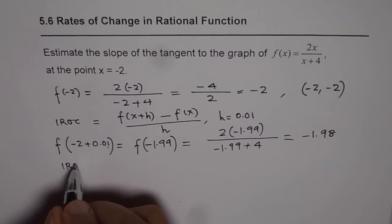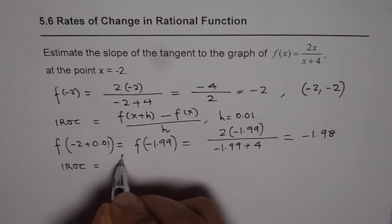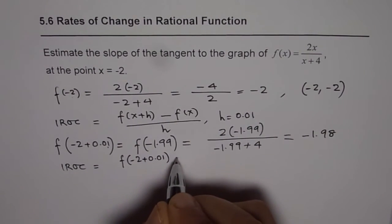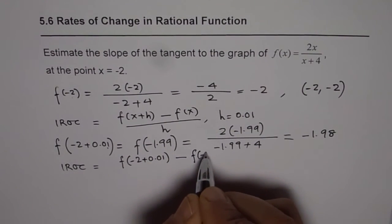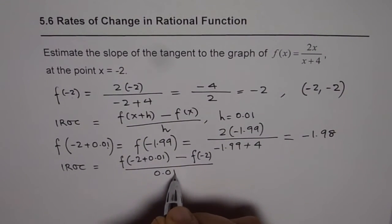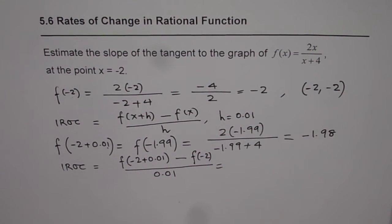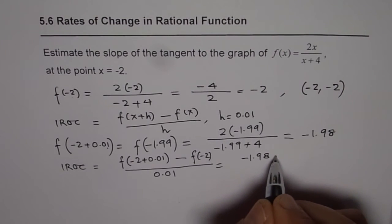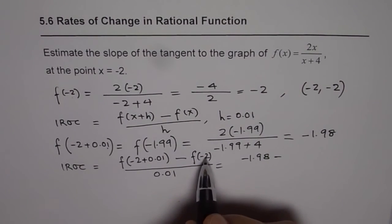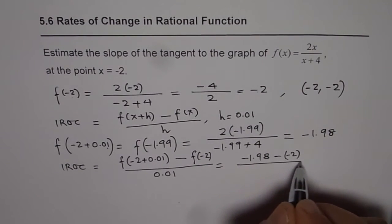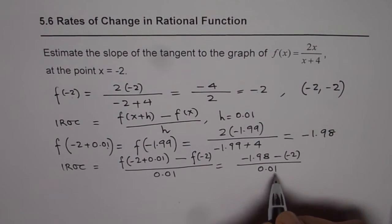So instantaneous rate of change for us is f(-2 + 0.01) take away f(-2) divided by 0.01. Now f(-2 + 0.01) is -1.98. Take away f(-2), which is -2, divided by 0.01. What do we get?